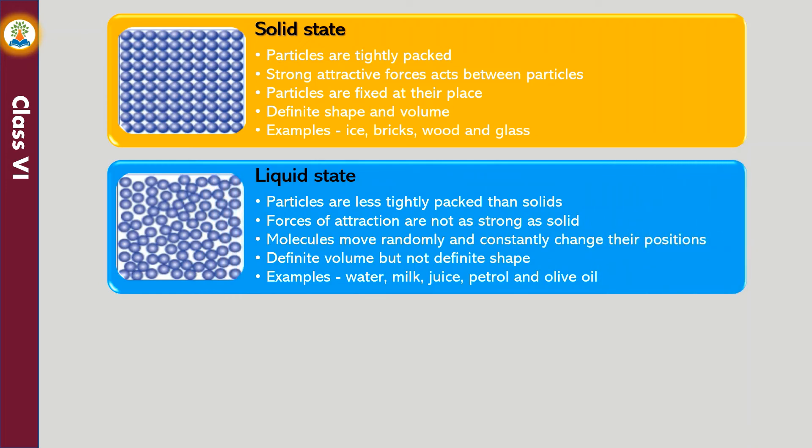In the liquid state, particles are less tightly packed than solids. Forces of attraction are not as strong as solid, so molecules move randomly and constantly change their positions. Liquids have definite volume but not definite shape. Examples: water, milk, juice, petrol, and olive oil.